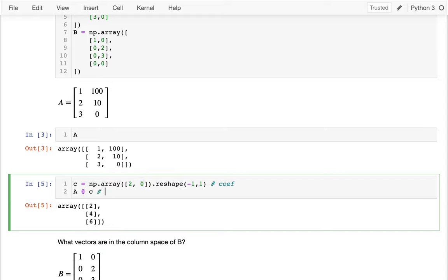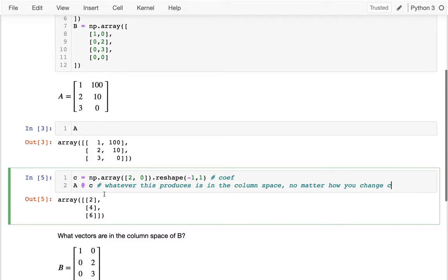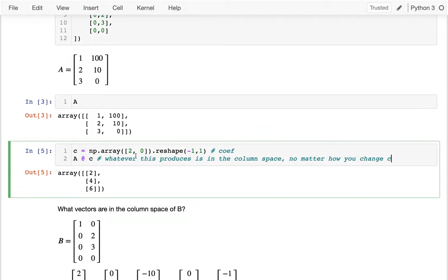You can see what's happening there. I'm taking 2 times that first column and 0 times that second column. So this vector I'm producing, that's in the column space. Really, whatever this produces is in column space, no matter how you change C. Maybe I could say something like negative 1, negative 2, negative 3. That vector is also in the column space.